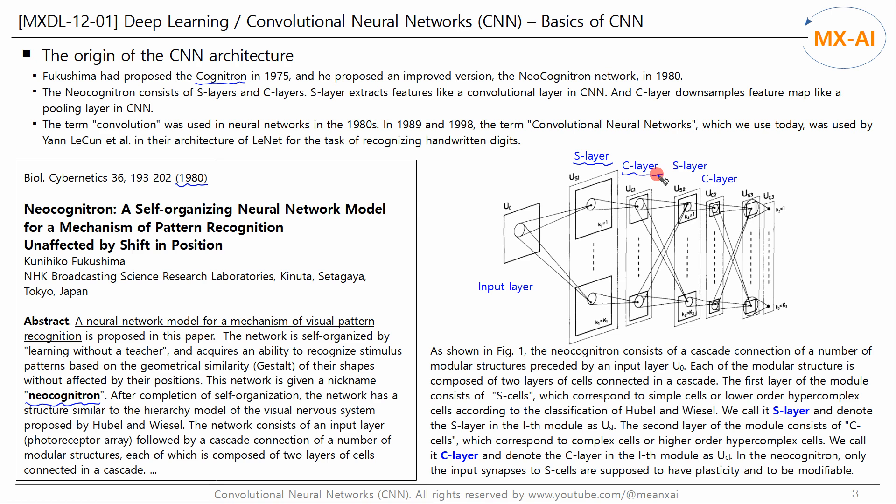The term convolution was used in neural networks in the 1980s. In 1989 and 1998, the term convolutional neural networks, which we use today, was used by Yann LeCun et al. in their architecture of LeNet for the task of recognizing handwritten digits.